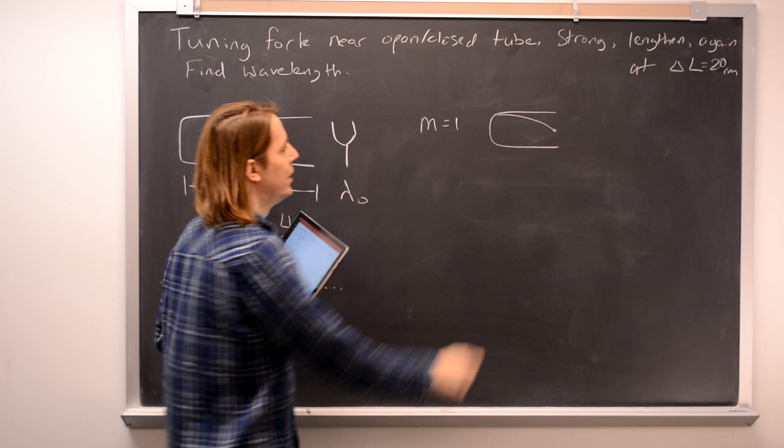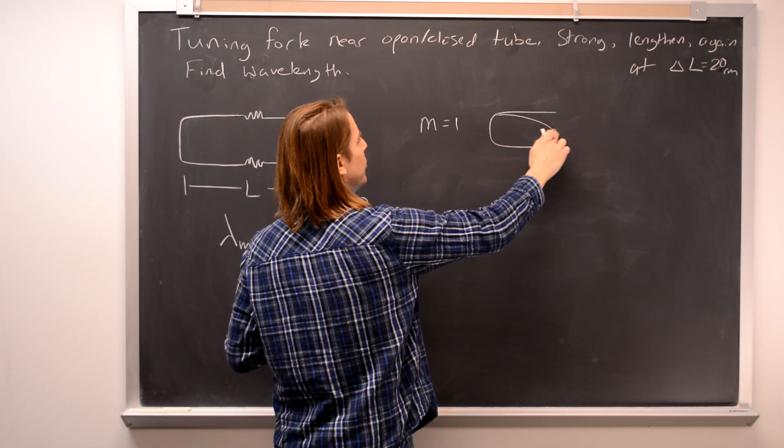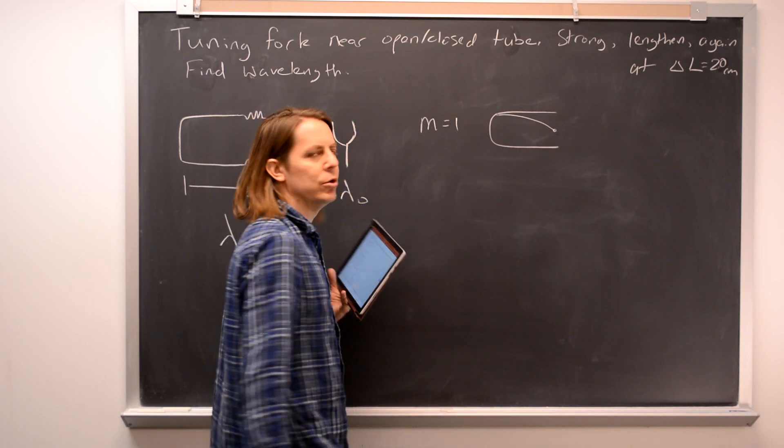So that's M equals 1. A node at atmospheric pressure there because it's open, and an anti-node high pressure there at the closed end.